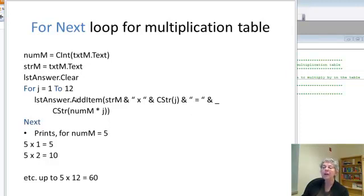So if my number is 5, when j equals 1, I'm going to print 5 times 1 equals 5. Then, when j equals 2, I'll go 5 times 2 equals 10 and so on. And I'll go up to 5 times 12 because I said my control variable should go from 1 to 12.